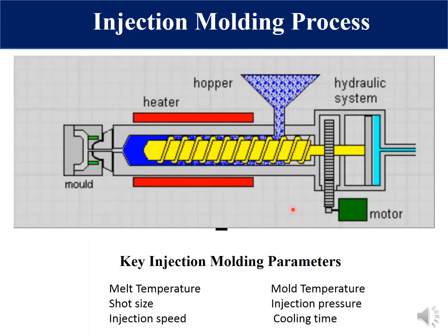During the injection molding process, polymer beads are converted into plastic parts in four steps: melting, injection, cooling, and ejection. The key parameters during injection molding processes are melt temperature, shot size, injection speed, mold temperature, injection pressure, and cooling time. These parameters are highly optimized to achieve continuous production of parts.